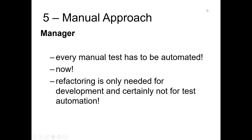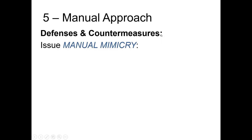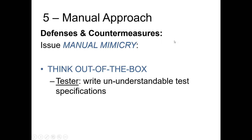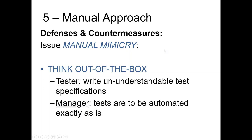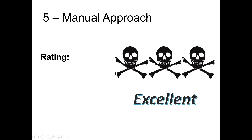The manager says every manual test has to be automated, and refactoring is needed only for development, not for test automation. The wiki issue is 'manual mimicry,' and it suggests 'think outside the box' — don't just execute automated tests as they're executed manually, but think how to use the possibilities automation offers. The countermeasure as a tester is to write an understandable test specification, because if the automator doesn't understand what the test is doing, they must do exactly as described and cannot use more intelligent methods. And as a manager, say tests must be automated exactly as specified by your best tester. So this is also quite an excellent method.